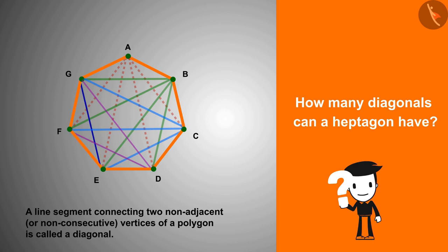When we try to draw diagonals from the vertices F and G, we find that all the diagonals formed from these vertices are already formed.